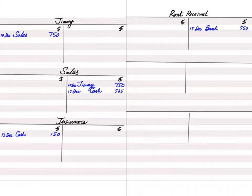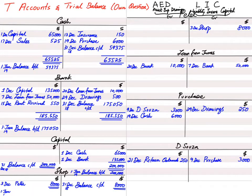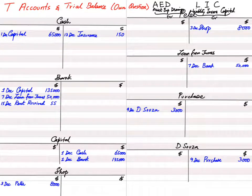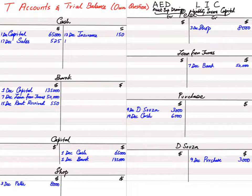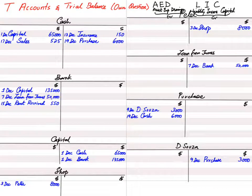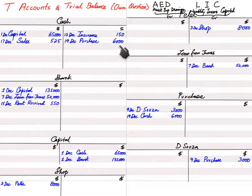Transaction 9: we bought more goods worth $6,000 in exchange for cash. When purchasing goods, the purchases account is debited with reference 'cash.' The cash account is credited with reference 'purchases,' because cash — an asset — is decreasing, and a decreasing asset is credited.